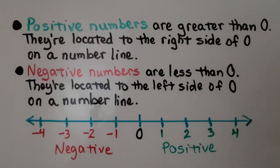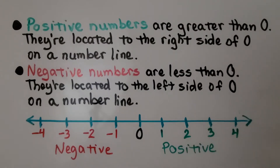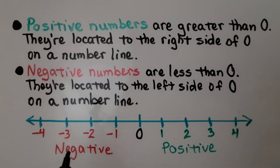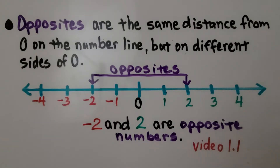Positive numbers are greater than zero. They're located to the right side of zero on a number line. Negative numbers are less than zero. They're located to the left side of zero on a number line. Opposites are the same distance from zero on the number line, but on different sides of zero.